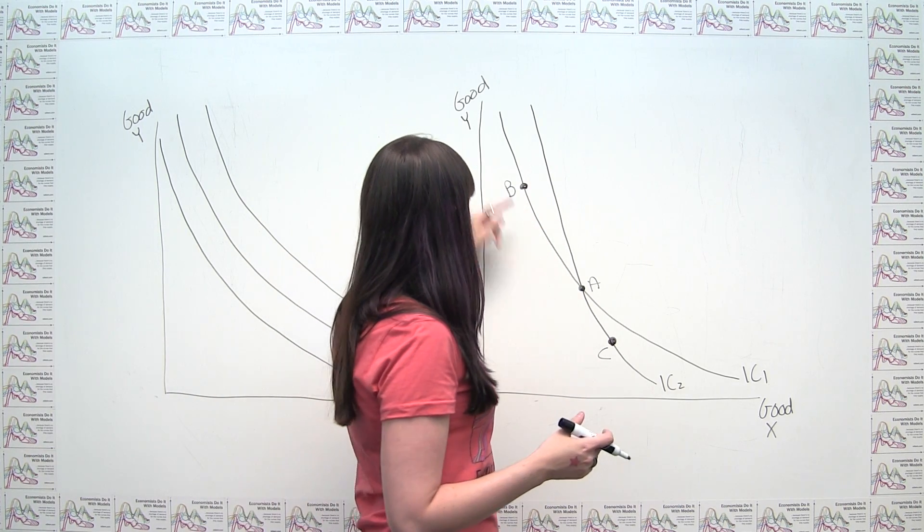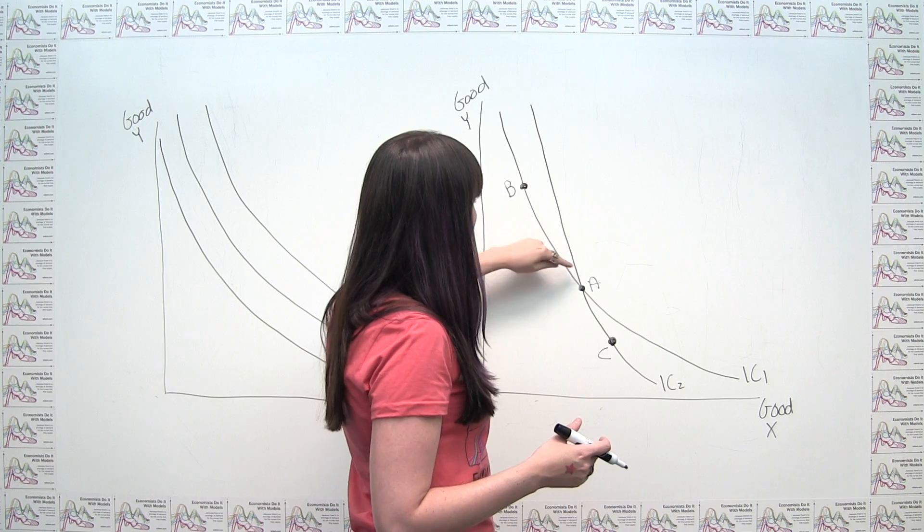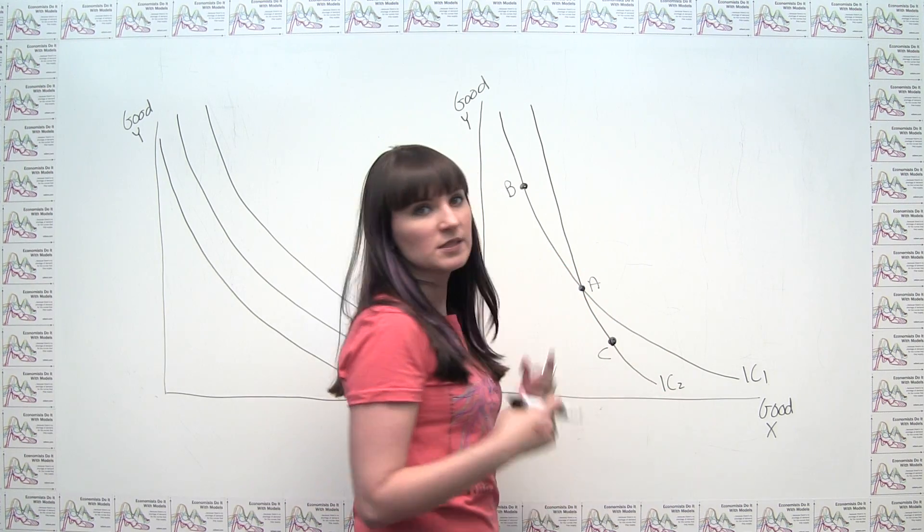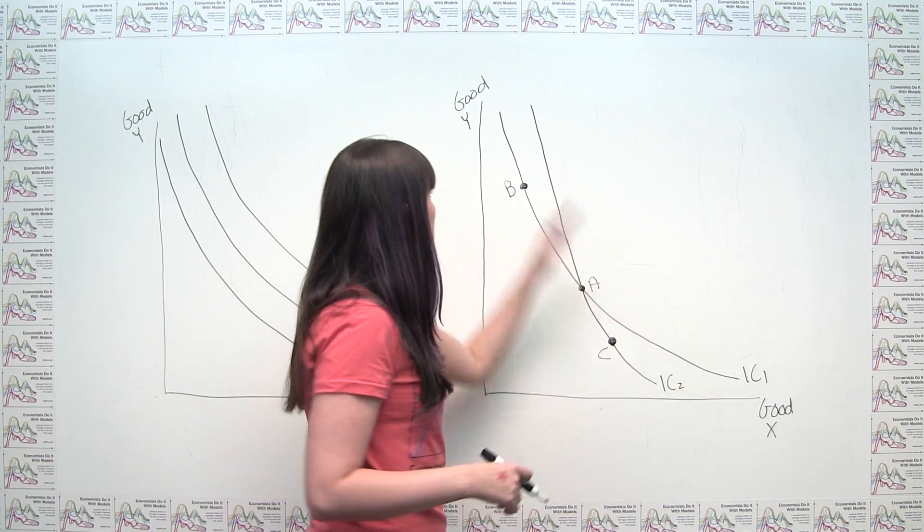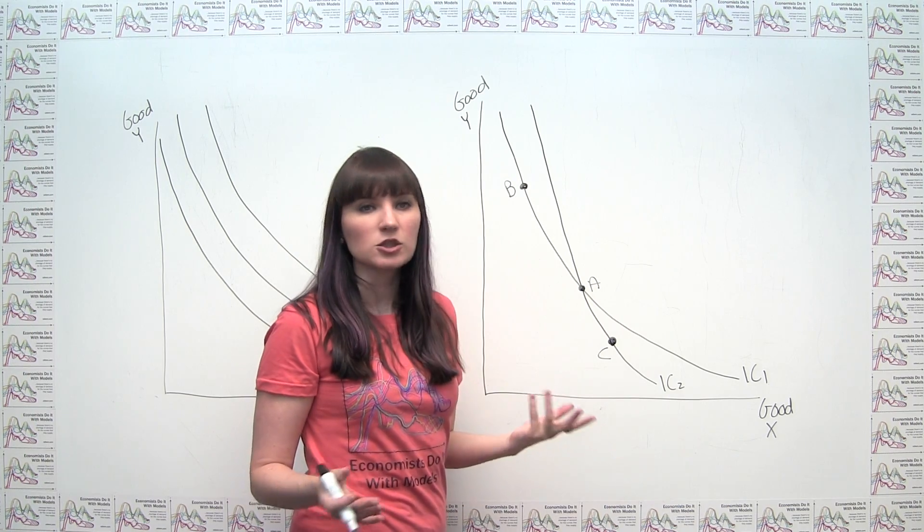So, for example, this first indifference curve, any single point, the consumer by definition doesn't care which one of these bundles of goods of X and Y he or she has.